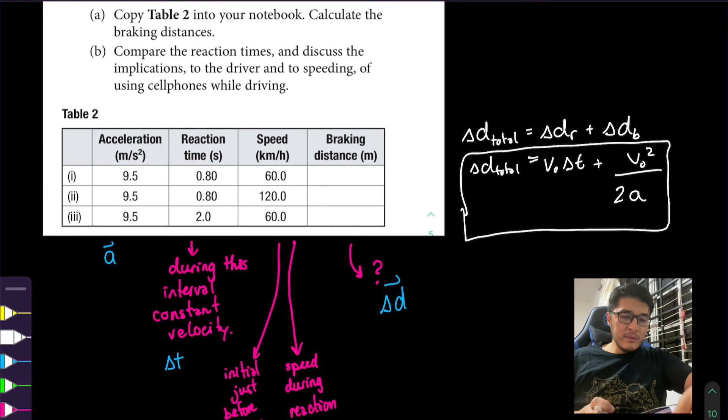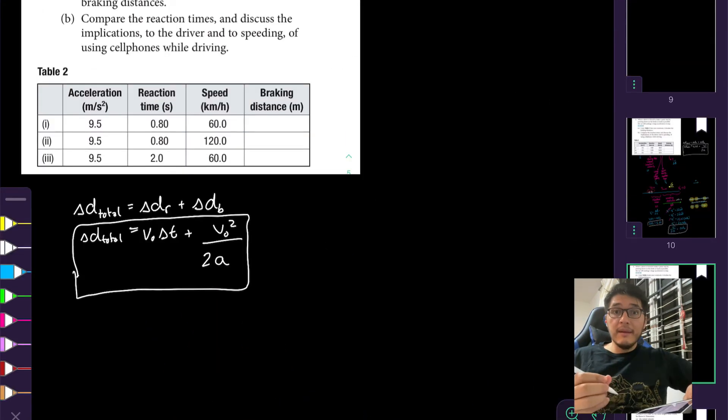Now what we need to do is just plug in the values for this big formula for all three cases. But before we get too excited, there's actually a trick that they're trying to do to us. Notice that the units are not actually all SI. So acceleration is in meters per second squared. Reaction time is in seconds. But the speed they're giving us in kilometers per hour. So we have to convert to meters per second. So make sure you convert the speed into meters per second before we try to use this formula.